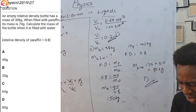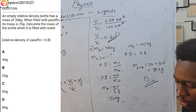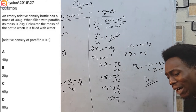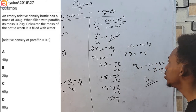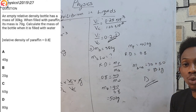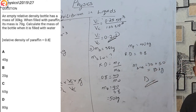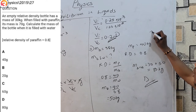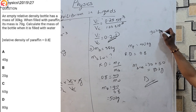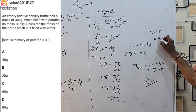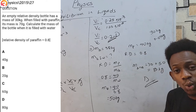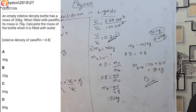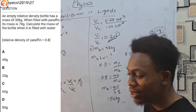Note: the question had a peculiarity — it started with the bottle mass as 30 g but then said 70 grams after filling with paraffin, which is consistent. We worked with a consistent unit throughout. An empty bottle cannot be 30 kg and then become 70 grams after filling — that would be a typo, so we treat both values as grams.